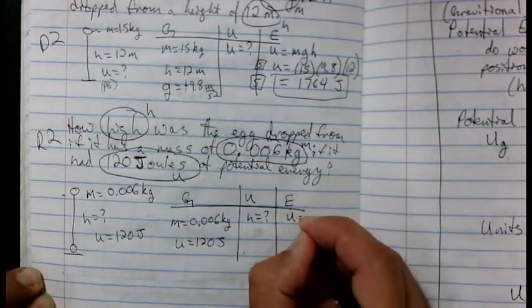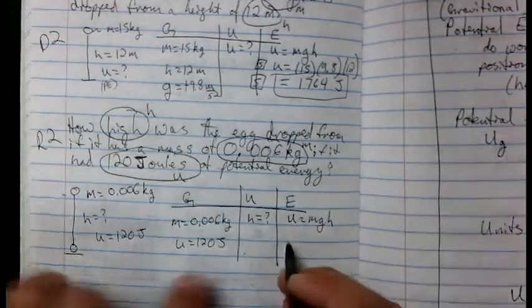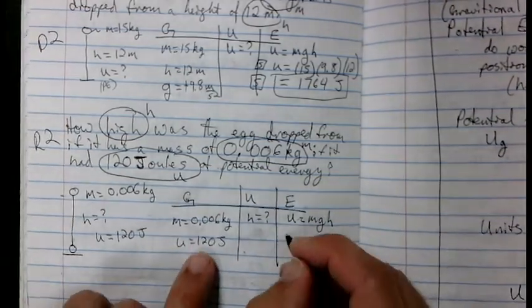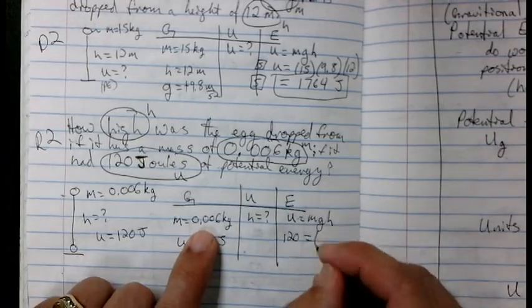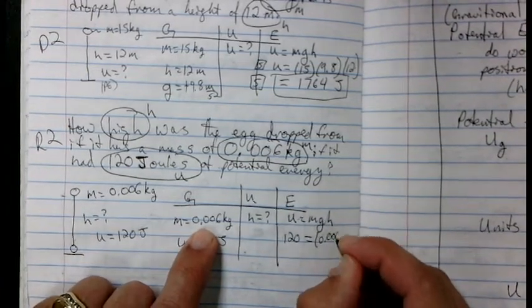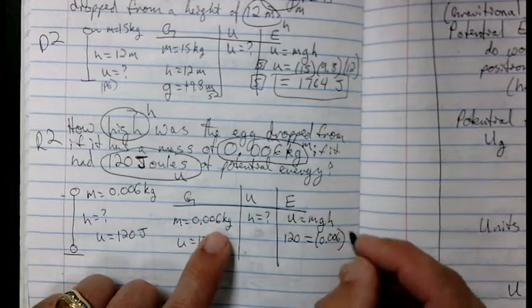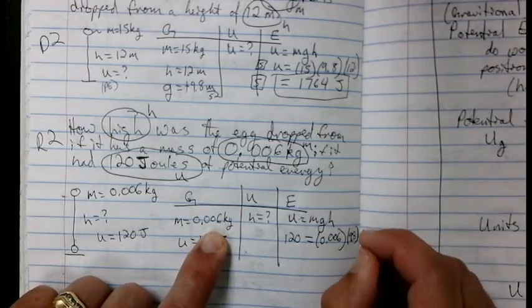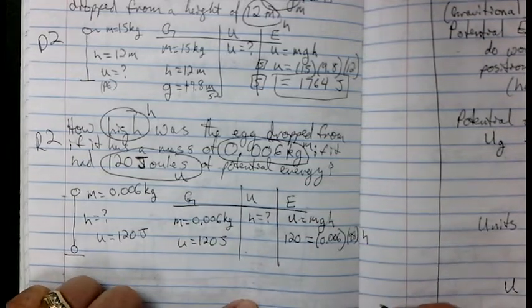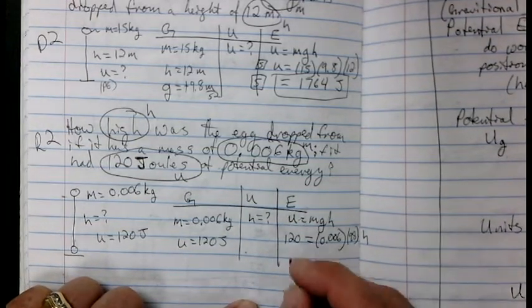U equals MGH. Do I know U? Yes, I do. 120 joules. Equals a mass of 0.006 kilograms. Times 9.8. Times H. So now I'm going to go ahead and solve.